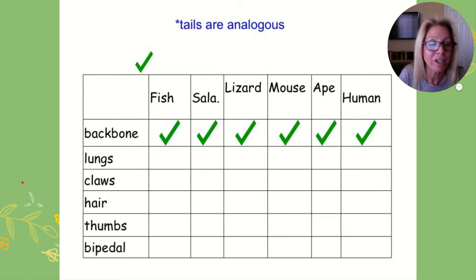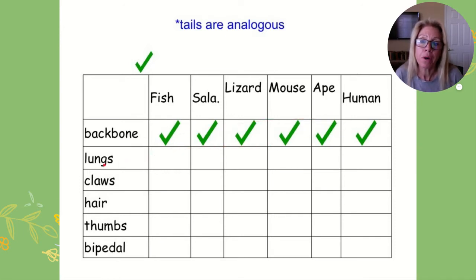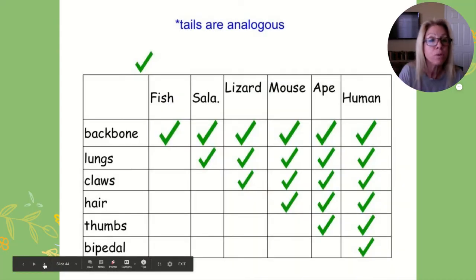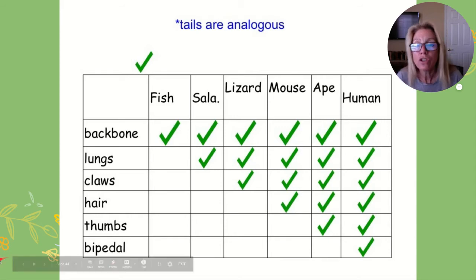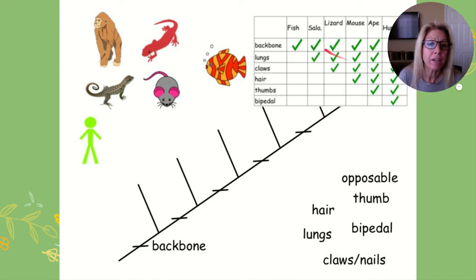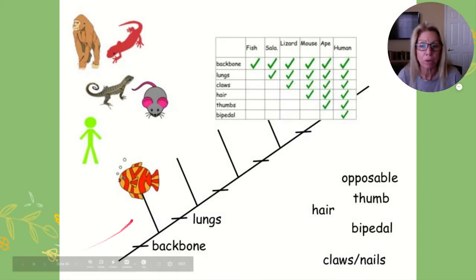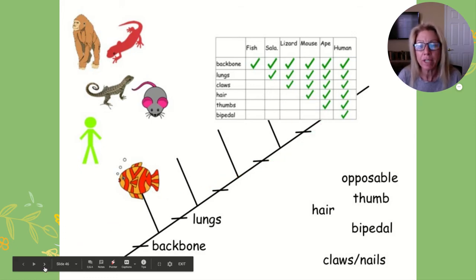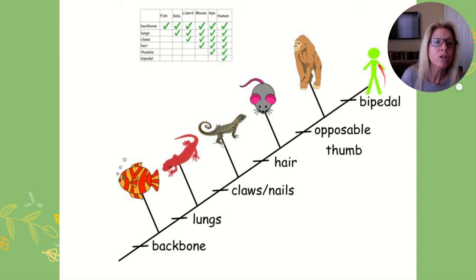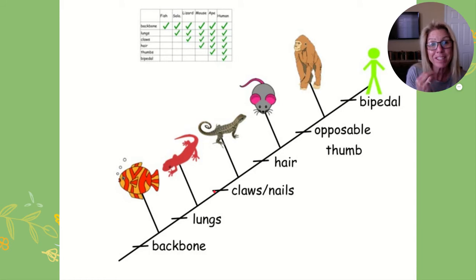Let me help you set one up using fish, salamander, lizard, mouse, ape, and human. All of them have a backbone. Then ask: do all of these have lungs? No — fish clearly do not. Set up a chart: backbone is the ancestral trait for all. Next character is lungs, and the fish becomes an outgroup. Work through each trait placing organisms into their groups. A human is more closely related to a mouse than to a salamander because they shared traits for longer — that's why it shows your ancestral history.